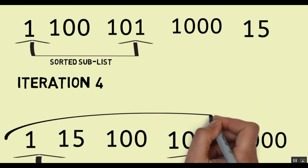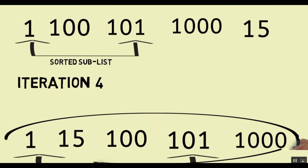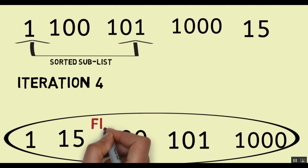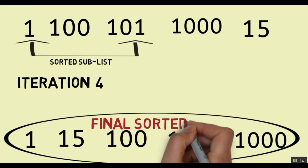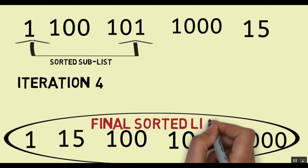After four iterations — that is, if we have n numbers, then at the end of n minus 1 iterations — the list is sorted and we get the final sorted list. This list has been sorted as per insertion sort.